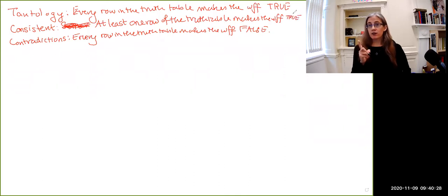So the first thing to note is that you don't want to think of consistent as sometimes true, sometimes false. Consistent just is at least one true, which means that every tautology is also going to count as a consistent formula.